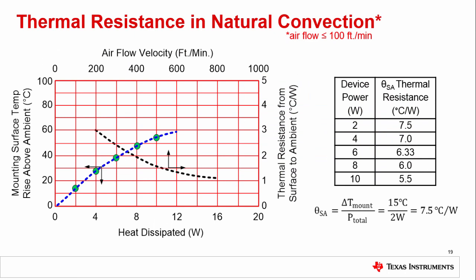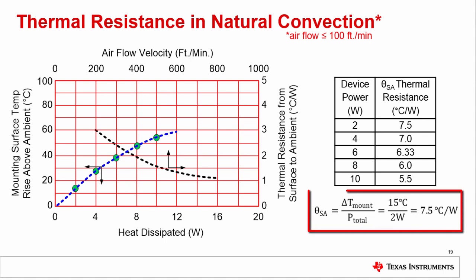The heat sink graph actually contains two different graphs. Each graph has its own unique x and y axes and units. In this case, the graph color blue is associated with the axes on the left and bottom of the chart. The black arrows on the graph point to the pertinent axis labels. In the case of the black graph, the axis labels are on the top and right side of the chart. The blue graph shows the relationship between heat dissipated in the heat sink versus the surface temperature of the heat sink above ambient. This information can be used to determine the heat sink's thermal resistance for a given power dissipation by dividing the change in surface temperature by the power dissipation. For example, for 2 watts of power dissipation, the heat sink surface temperature will rise by about 15 degrees C. Dividing 15 degrees C by the 2 watts of power dissipation yields a thermal resistance of about 7.5 degrees C per watt. The table on the right gives the results for several power dissipation values. As you can see, this heat sink's thermal resistance actually decreases with increased heat dissipation.